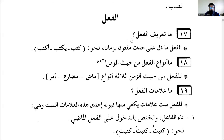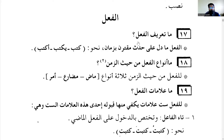As-salamu alaykum wa sallallahu alayhi wa sallam. The 17th question in Nahw: we talked about nouns and the different types — Mu'rab, Mabni, and even within Mu'rab we saw Munsarif and Ghair Munsarif. So the 17th question begins on verbs: what is the definition of a verb?